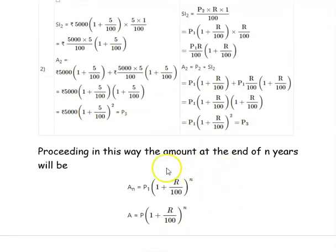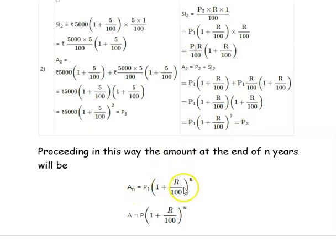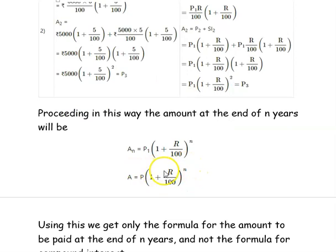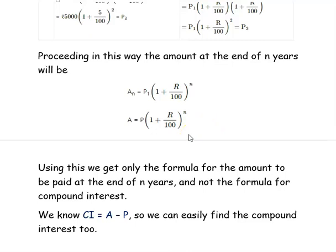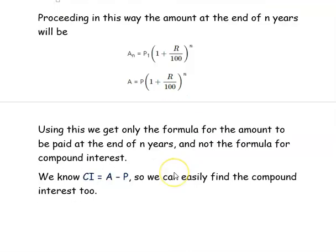Proceeding in this way, the amount at the end of N years will be AN = P1 × (1 + R/100)^N. For second year we write power 2, and for N years, it is (1 + R/100)^N. This formula gives the amount to be paid, not the compound interest directly. So, compound interest equals amount minus principal: CI = A − P. Using this formula, we can directly calculate the compound interest and also the amount to be paid. Thank you for watching the video.